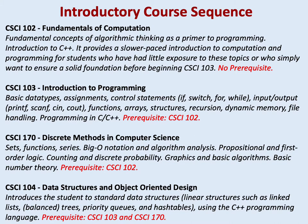Listed below are our introductory course sequence for computer science courses. These courses will set the foundation for programming that will help you with your future computer science coursework. Listed in red will be the prerequisites for each course. This is a sequence, so students generally start off with CSCI 102, Fundamentals of Computation. The next semester they would take CSCI 103 as well as CSCI 170, and from there they would move on to CSCI 104.